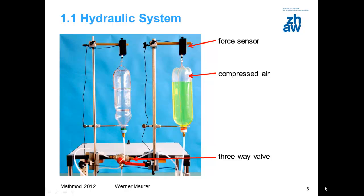The fundamental principles of a dynamic system can best be explained using this example from hydraulics. Two connected plastic bottles form an easily understandable dynamic system. At the beginning, one of the bottles is filled with water and compressed air. Now for the system dynamic model.